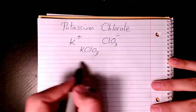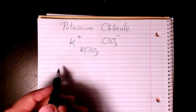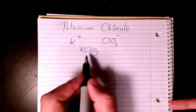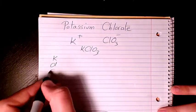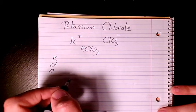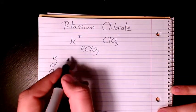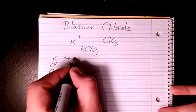Now if I want to find out the molar mass, we need to list all the elements, which is potassium, chlorine, and oxygen. These are the elements we have, and we need to find out the atomic mass of each of them from the periodic table.